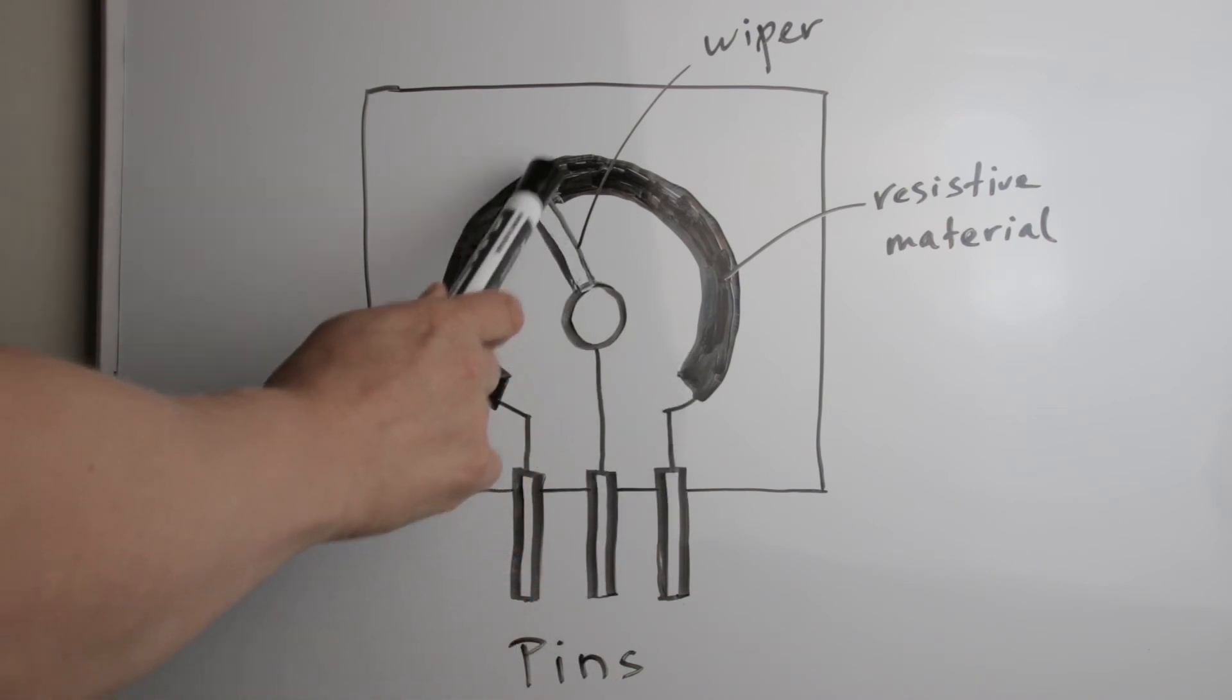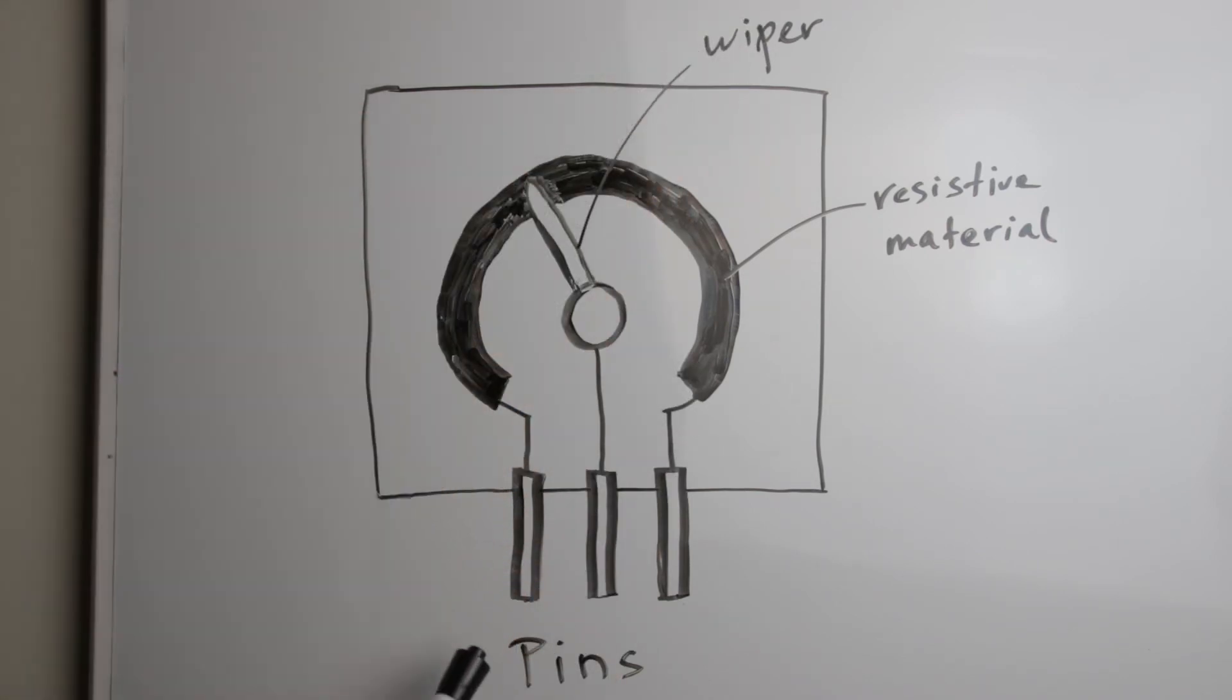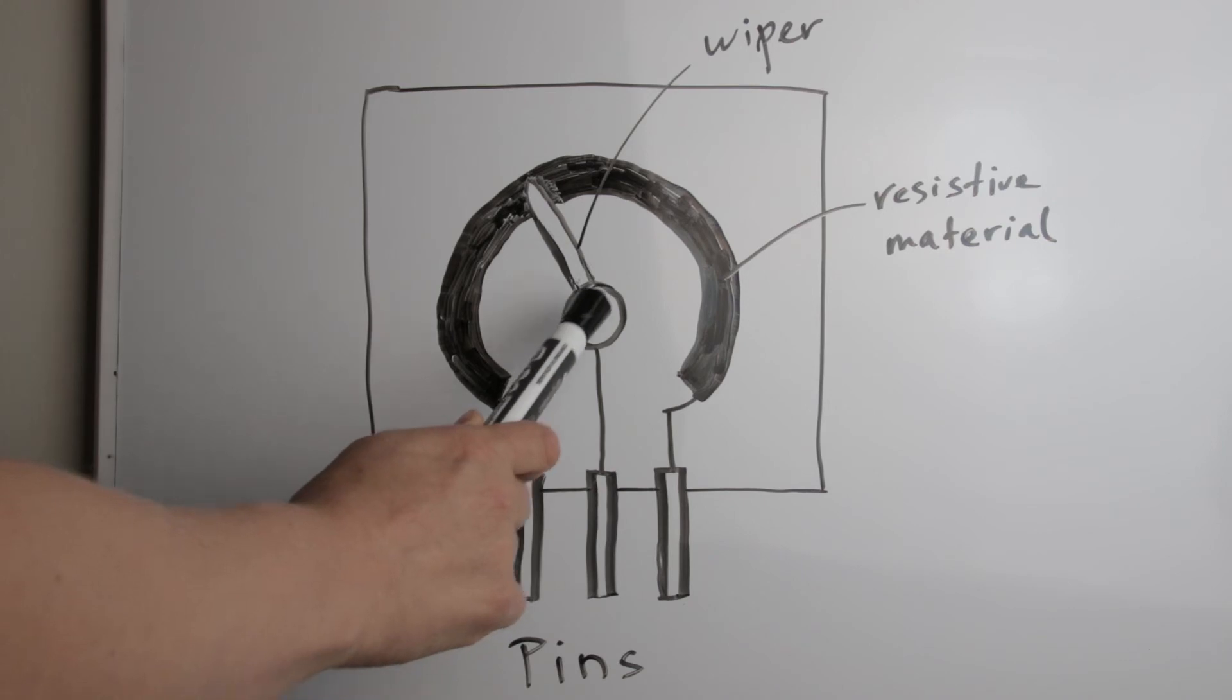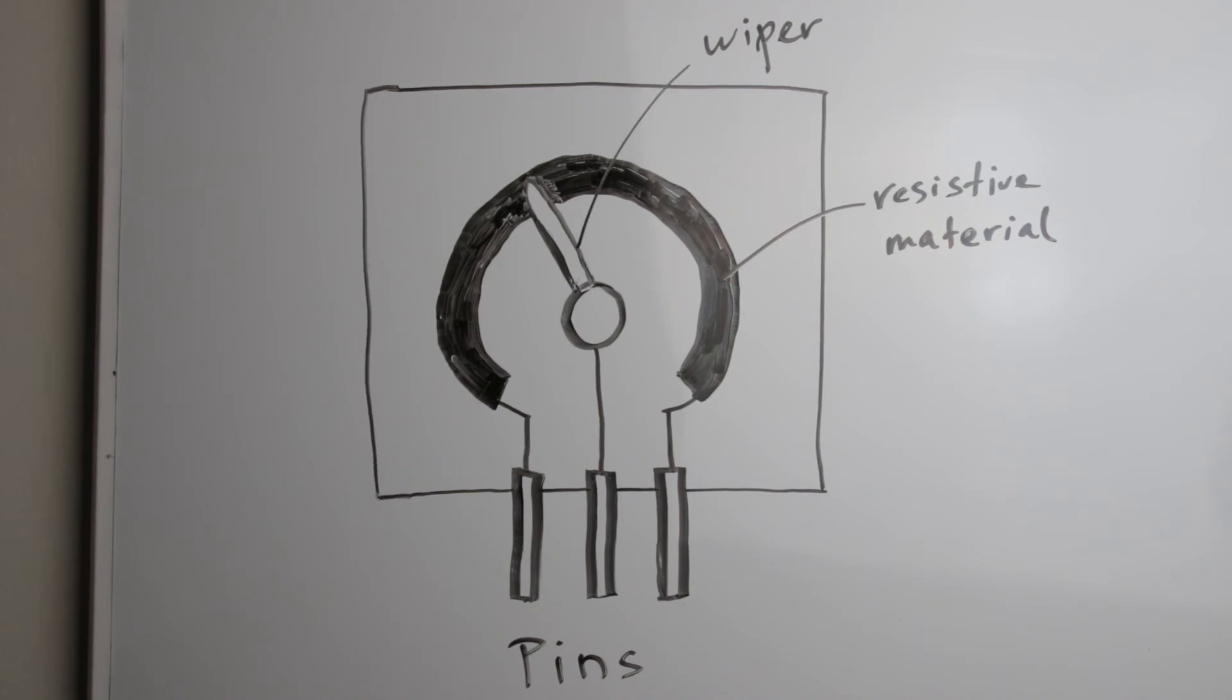If the wiper is placed exactly at 30% from pin 1 as shown here, if we measure the resistance between pins 1 and 2, we will get 30% of the total resistance, and measuring across terminal 2 and 3 will get a resistance of 70% of the total resistance. So the terminals 1 and 2, or terminals 2 and 3, can be used to obtain the variable resistance, and the knob can be used to vary the resistance and set the required value.